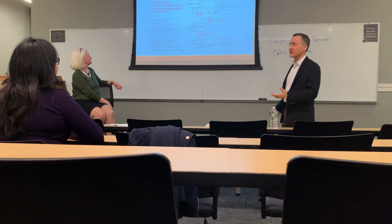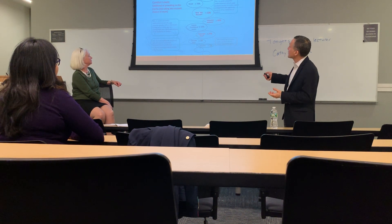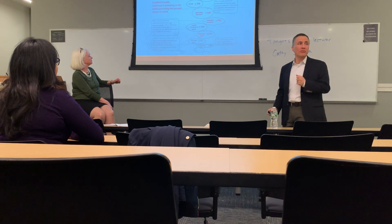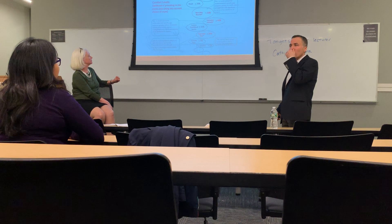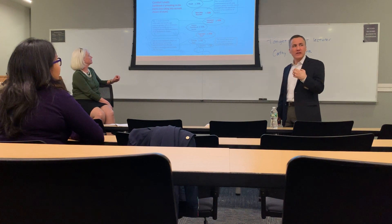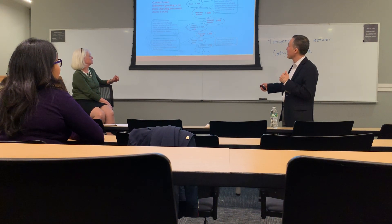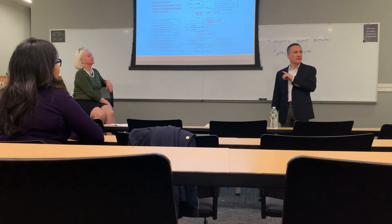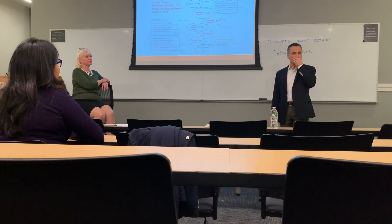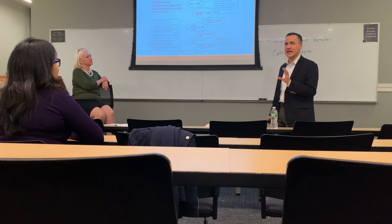Back to the comfort levels chart: the ones we look at mostly are more likely than not, substantial authority, and reasonable basis plus disclosure. The one oddball rule that gets you out of negligence is having a realistic possibility of success — the only time you'll see that standard is just to get out of a negligence penalty.